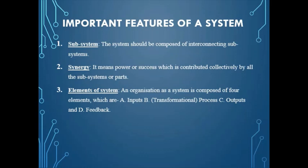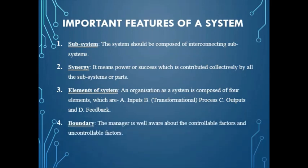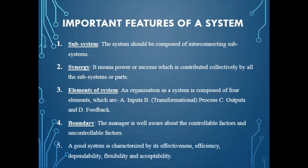Number 3 — Elements of system: An organization as a system is composed of 4 elements, which are inputs, transformational process, outputs, and feedback. The manager is well aware of the controllable and uncontrollable factors. A good system is characterized by its effectiveness, efficiency, dependability, flexibility, and acceptability.